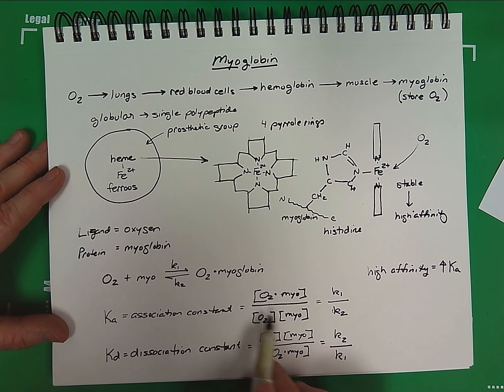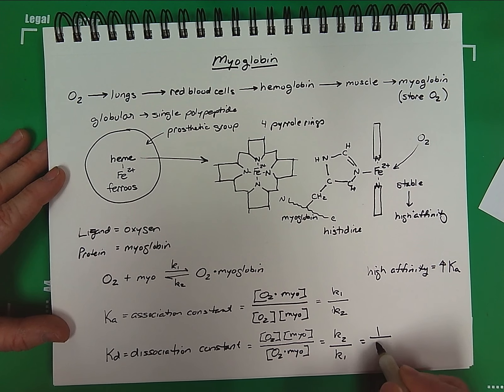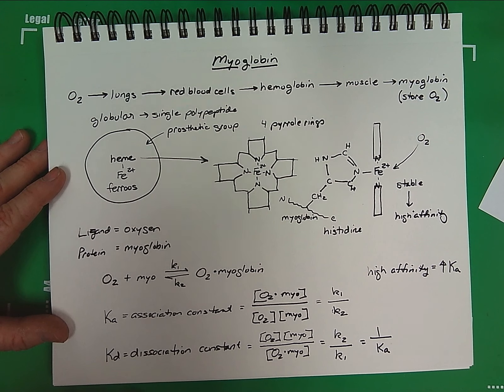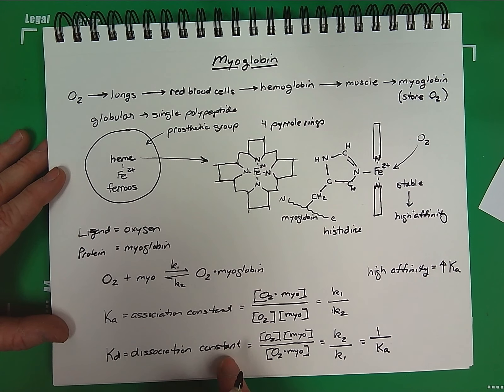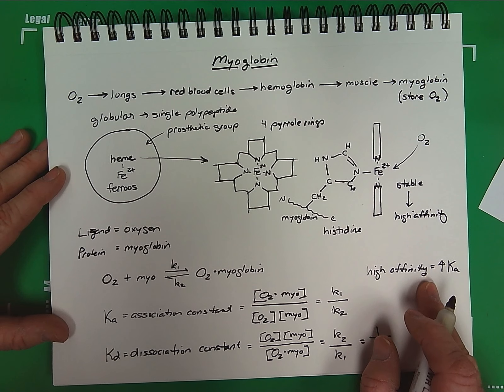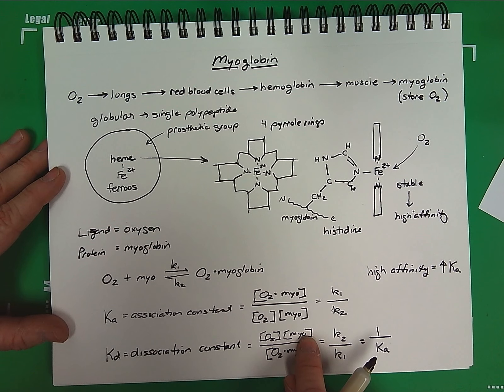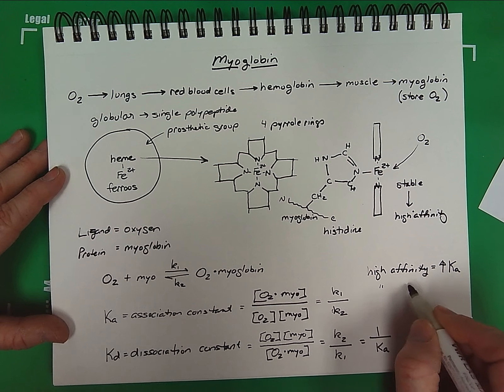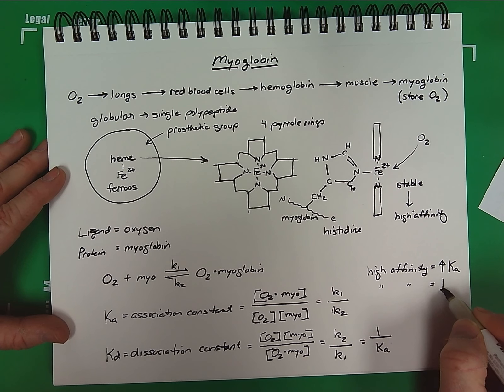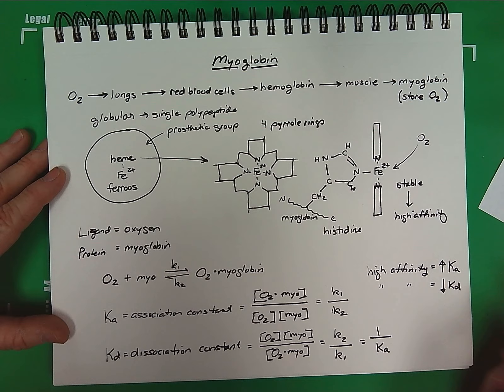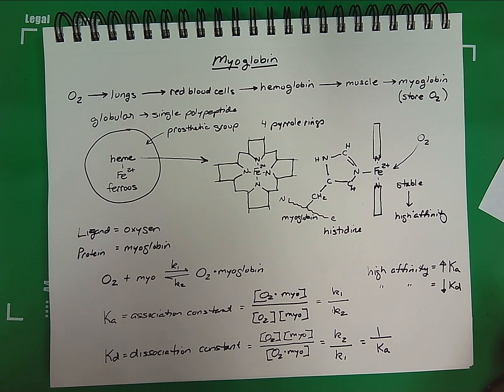Now, this is essentially the inverse of Ka. So this is equivalent to one over the association constant. So in terms of Kd, when we're discussing affinity, what we want to see here is very little product form in the reverse reaction and a high concentration maintaining in the complex form. So this means that high affinity for Kd equals a very low dissociation constant.